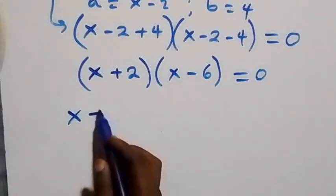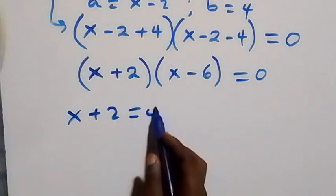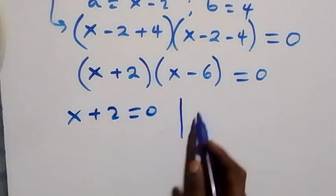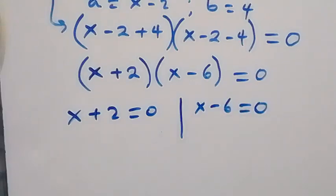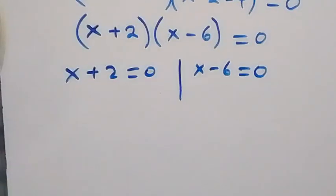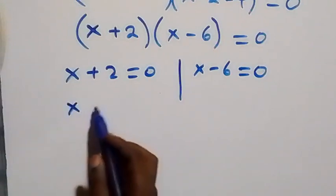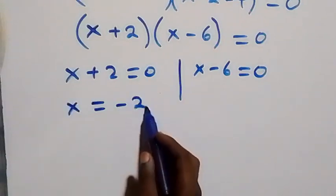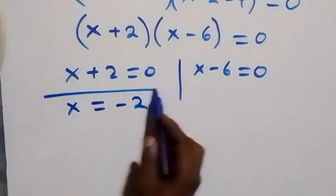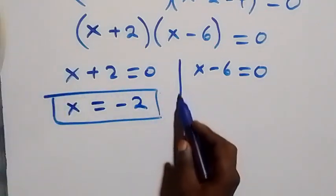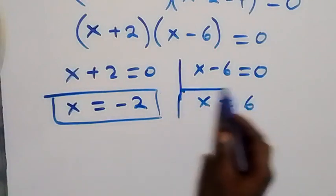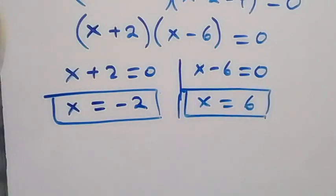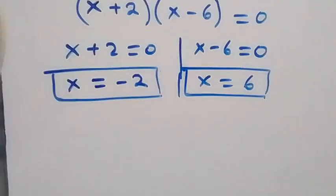We have two possible cases: x plus 2 equals to zero, or x minus 6 equals to zero. This implies x equals minus 2, which is a real solution, and also x equals 6, which is also a real solution.